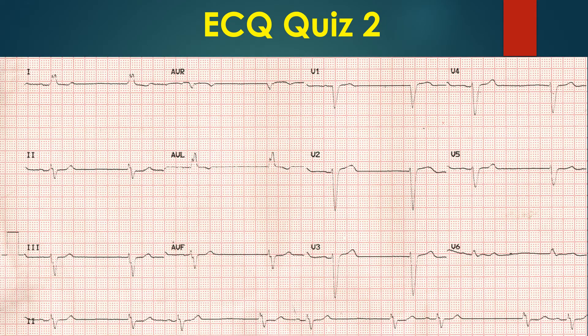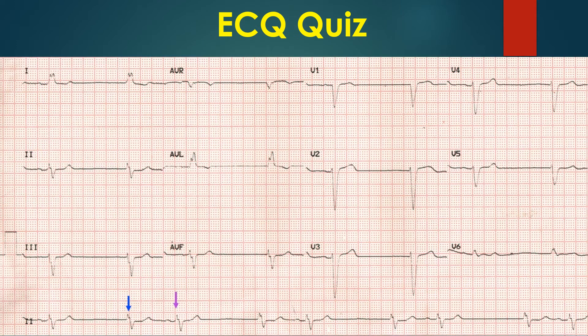What are the salient features on the ECG? What is the mechanism? Lead 1 and AVL show wide QRS complexes suggestive of left bundle branch block. PR interval for the sinus beat is 200 ms, at the upper limit.